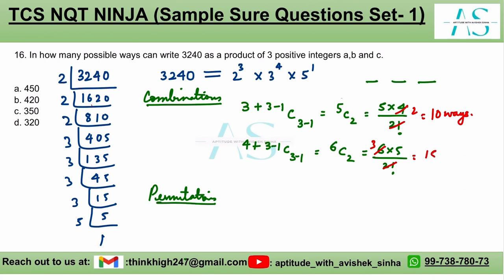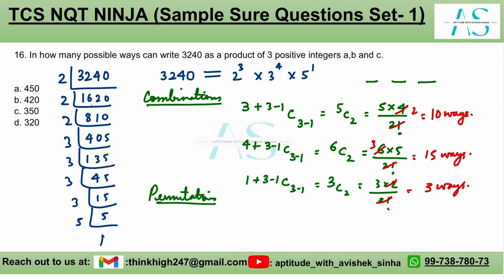Now the last one — for 5, we have it 1 time, so (1 + 3 - 1) C (3 - 1) = 3C2, which is 3 × 2 divided by 2 factorial. The 2s cancel and we have 3 ways.